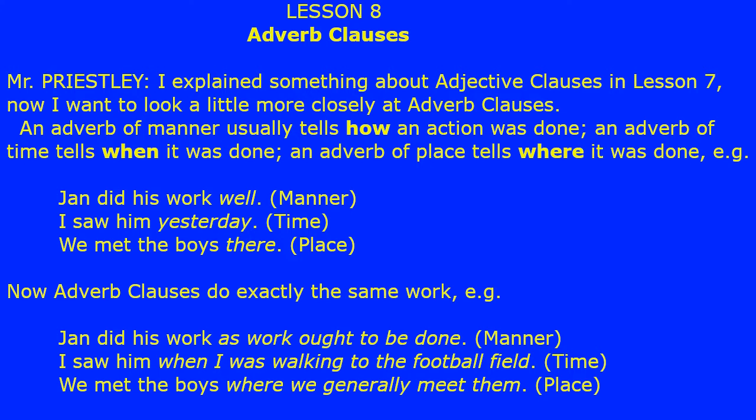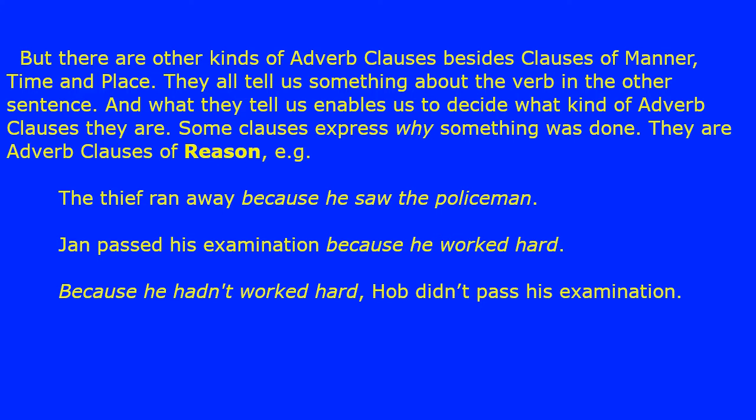An adverb of manner usually tells how an action was done. An adverb of time tells when it was done. An adverb of place tells where it was done. For example: Jan did his work well (manner), I saw him yesterday (time), we met the boys there (place). Now adverb clauses do exactly the same work. For example: Jan did his work as work ought to be done (manner), I saw him when I was walking to the football field (time), we met the boys where we generally meet them (place).